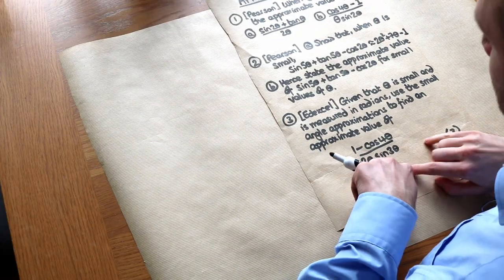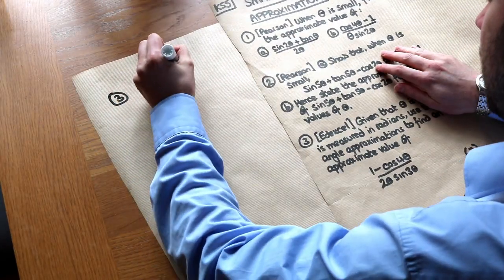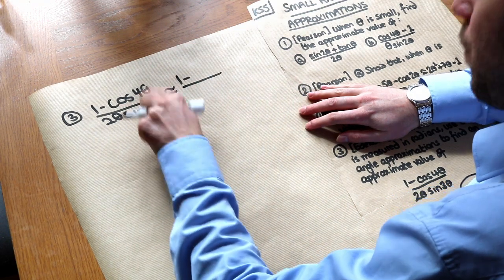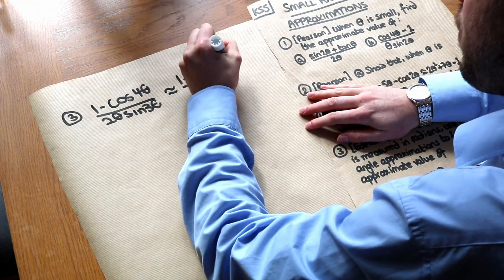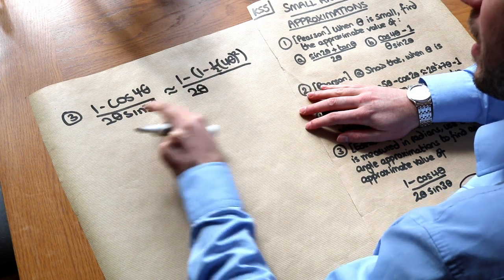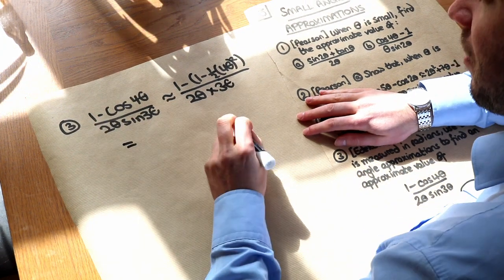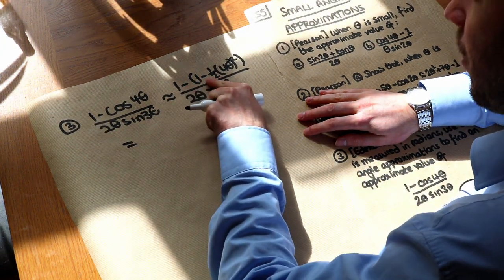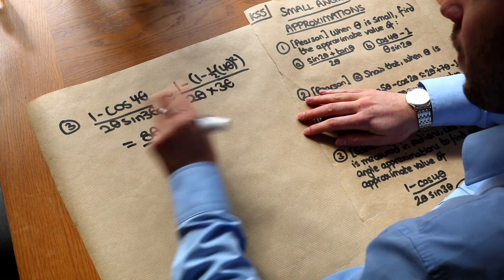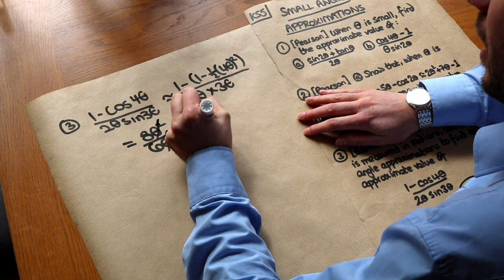Finally, an exam question — very similar to question 1b. We have (1 − cos4θ) / (2θ · sin3θ). Substituting: cos4θ ≈ 1 − ½(4θ)², so the numerator is 1 − (1 − ½ · 16θ²) = 8θ². The denominator is 2θ · 3θ = 6θ². The theta squareds cancel, giving 8/6 = 4/3 as the answer.